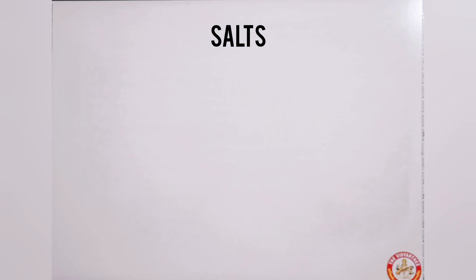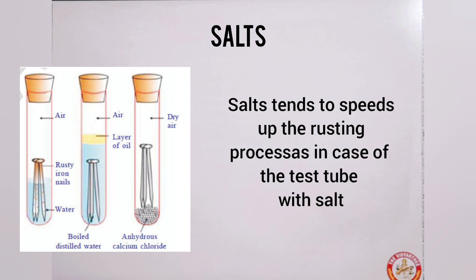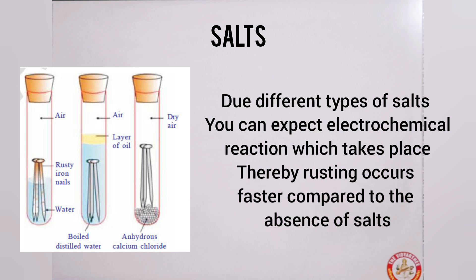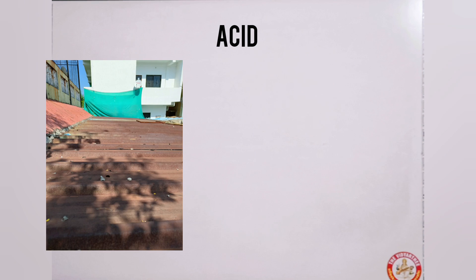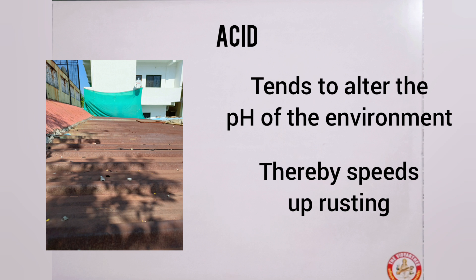The second factor is the presence of salt nearby. Salt tends to make the rusting process faster, and due to different types of salts, you can expect an electrochemical reaction which speeds up rusting. The third factor is the presence of an acid, which tends to alter the pH of the environment, and a lower pH fastens the rusting process.